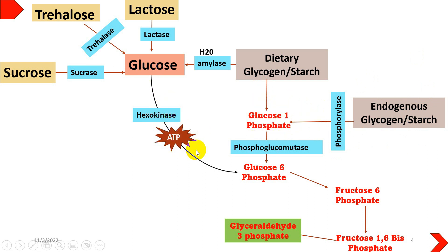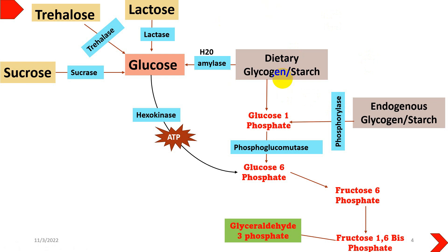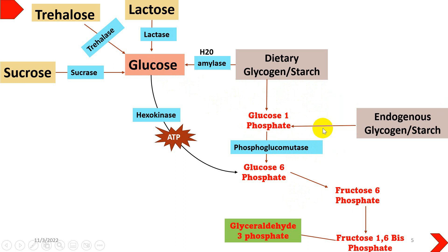One important thing to remember: feeder pathways coming from glycogen utilize less ATP. In the main glycolysis pathway starting from glucose, one ATP is used in the first step. But in the glycogen case, no ATP is utilized — the phosphorylase enzyme directly converts it to glucose-1-phosphate. That is why glycogen is an instant source of energy between meals, maintaining blood glucose. As a result, one less ATP is used in the investment phase, so glycolysis starting from glycogen yields one more ATP than glycolysis starting from glucose.